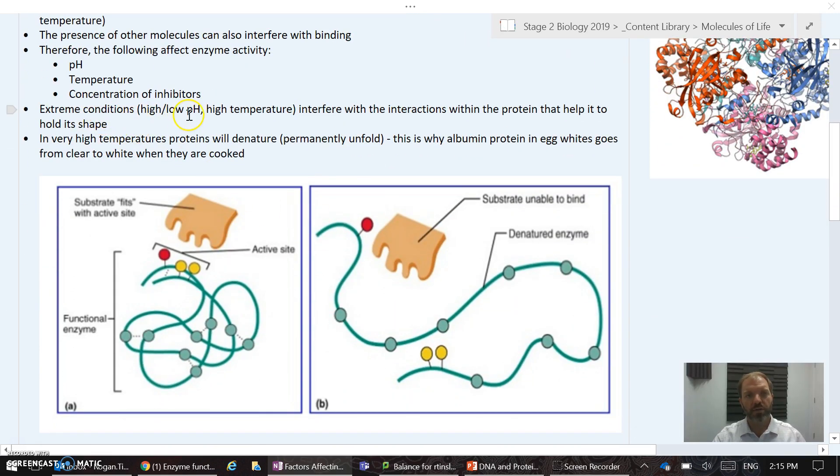Extreme conditions like very high or low pH or high temperature will interfere with these interactions that help the protein to hold its shape. If the temperature goes very high, the protein might unfold permanently. This diagram shows perhaps some important side chains on this active site that are going to bind to be complementary to this substrate. If we heat this up or provide extreme pH, those bonds may no longer function and the polypeptide is going to unfold. That means these side chains are now no longer together and therefore we've destroyed the active site and this is a denatured enzyme.